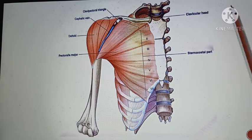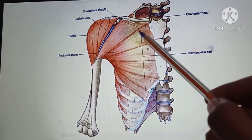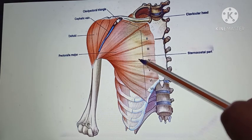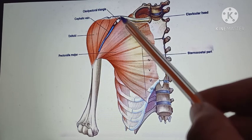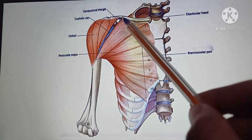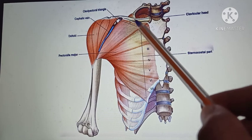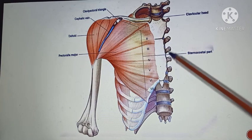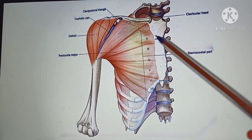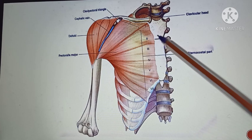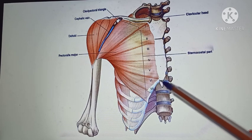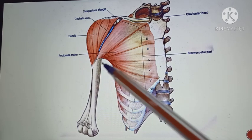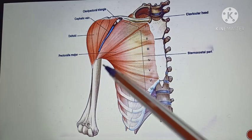Now coming to the origin of the pectoralis major muscle, let us first identify the bones present here. This bone is the clavicle. This is the sternum — here is the manubrium part, this is the body, and this is the xiphoid process. Whereas this bone over here is the humerus.